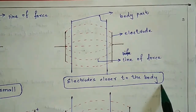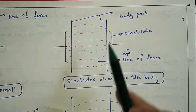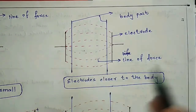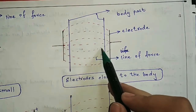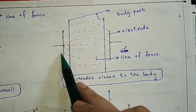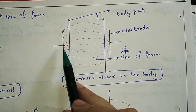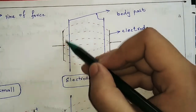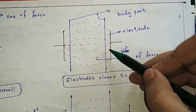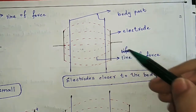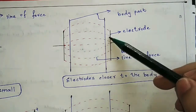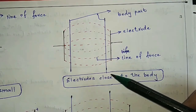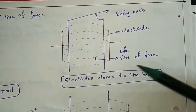If the electrode is too close to the body, the concentration of the electric field will be more at the superficial level, resulting in superficial heating rather than the required deep heating. Similarly, if the electrode is at an uneven distance, the concentration of the electric field will be uneven — more on one side, less on the other — causing uneven heating.